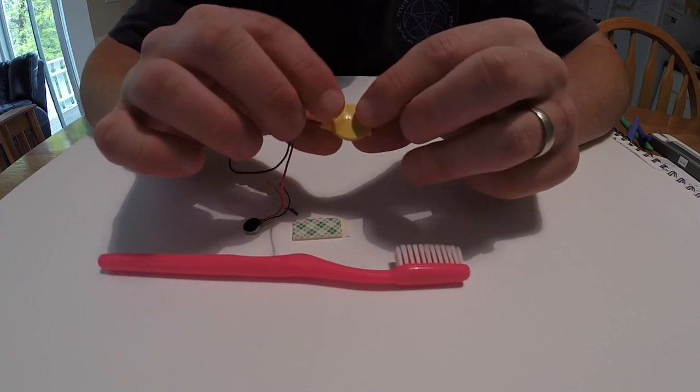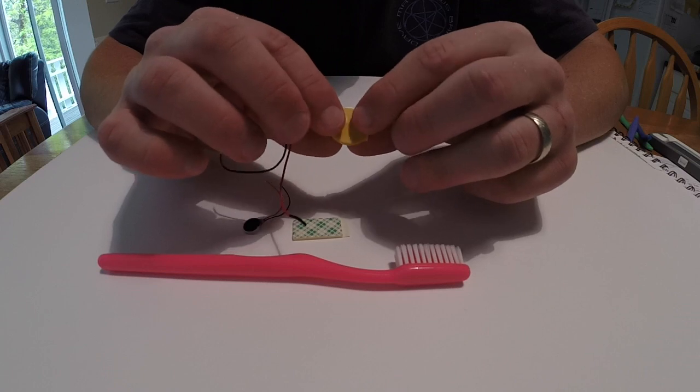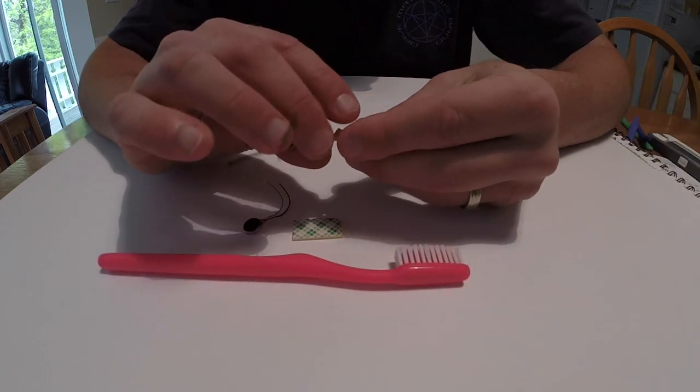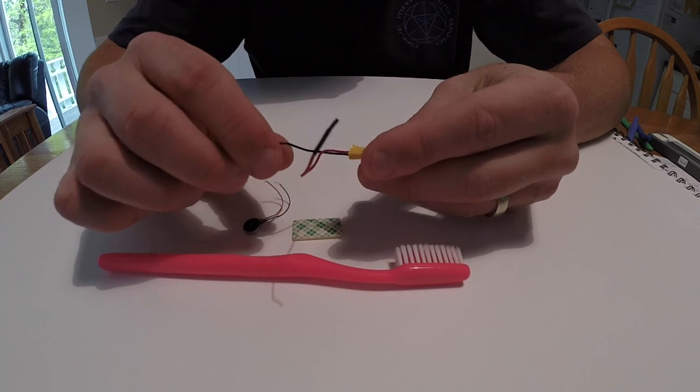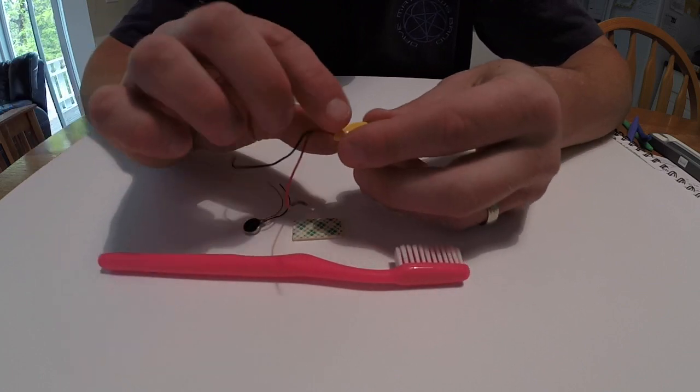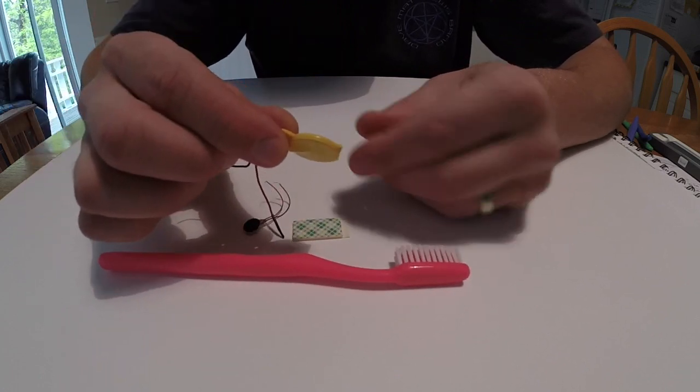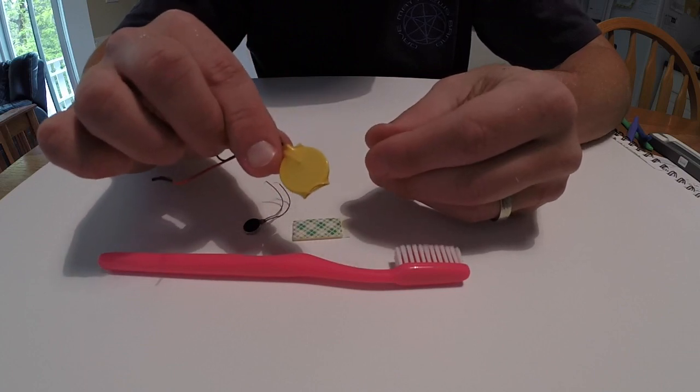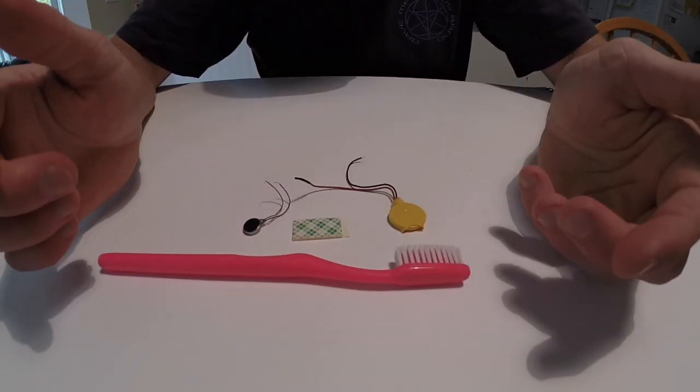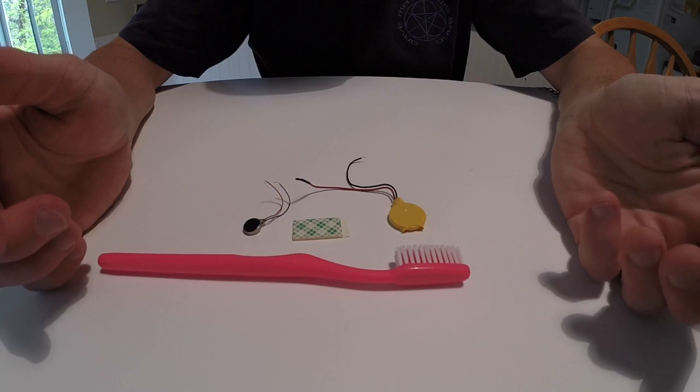And if you were to buy anything from the maker store, this is how they would come. But this is very simple and cheap to make your own if you wish to do that. In terms of tools for this actual robot, all you would really need is something to cut the toothbrush.